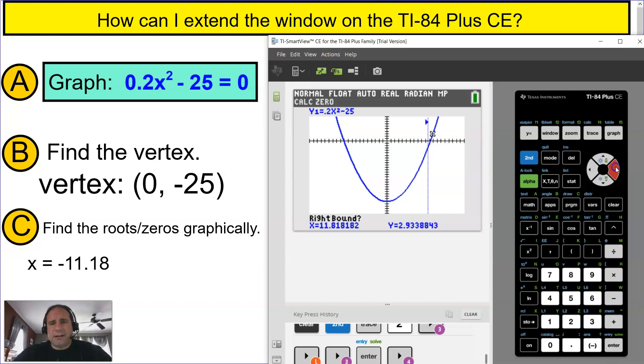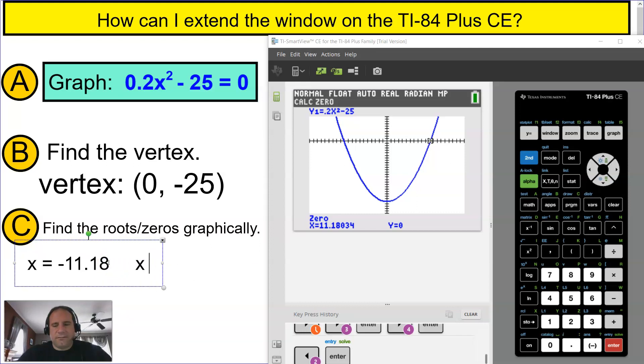Once it says right bound, I'm going to move that cursor up past where it crosses the x-axis, and then I'm going to just guess and press enter again. And that is my second root: 11.18.